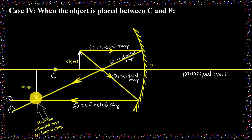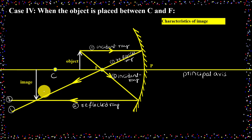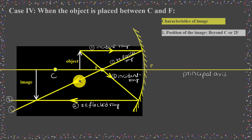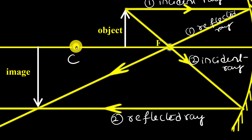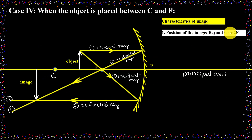I have drawn the image and labeled it. Now we need to look at the characteristics of the image. The first characteristic is the position of the image. Observing the diagram, the object is between the center of curvature and focus, but the image is formed beyond the center of curvature — that is, beyond C or 2F, because the center of curvature is twice the focal length.